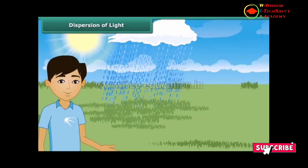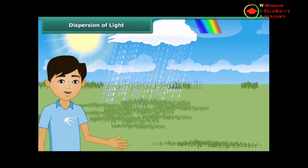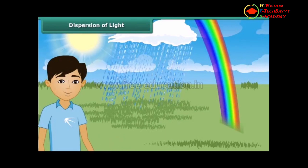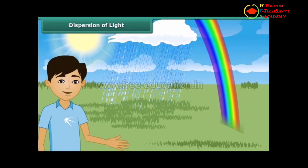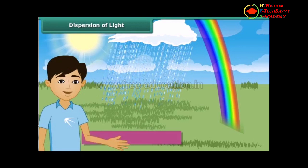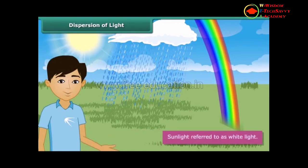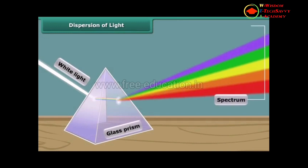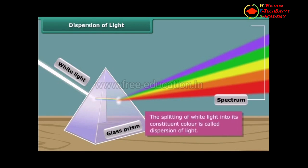What do we observe in the sky after rainfall? Yes, a beautiful multi-colored rainbow — but where did all these colors come from? We know that sunlight is referred to as white light. When this light passes through a glass prism, the light splits into seven colors, meaning that the beam of white light has split up into its constituent colors. This group of colors represents the spectrum of white light. This phenomenon of splitting of white light into its constituent colors is called the dispersion of light.